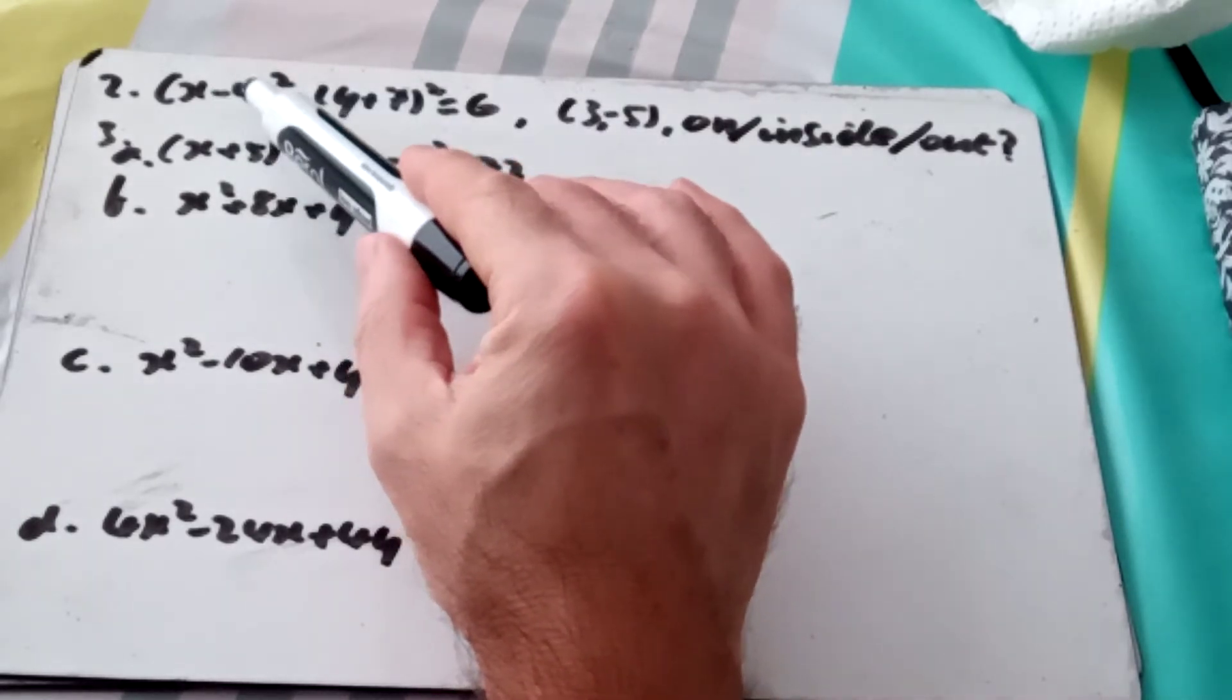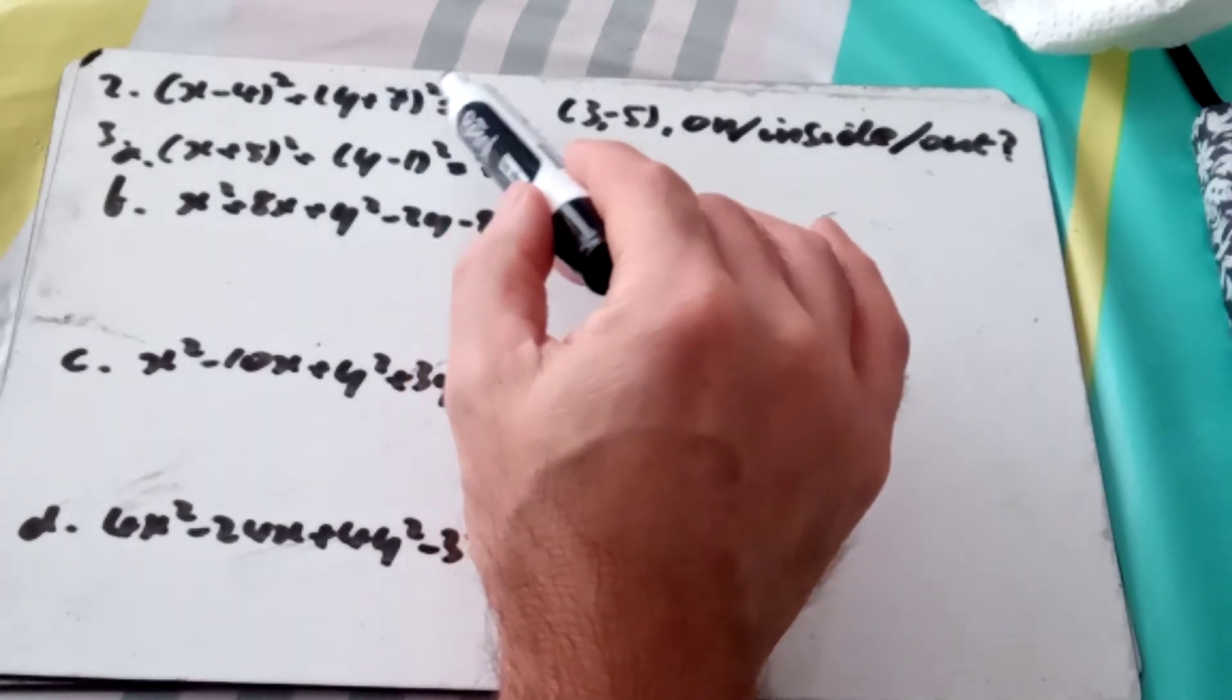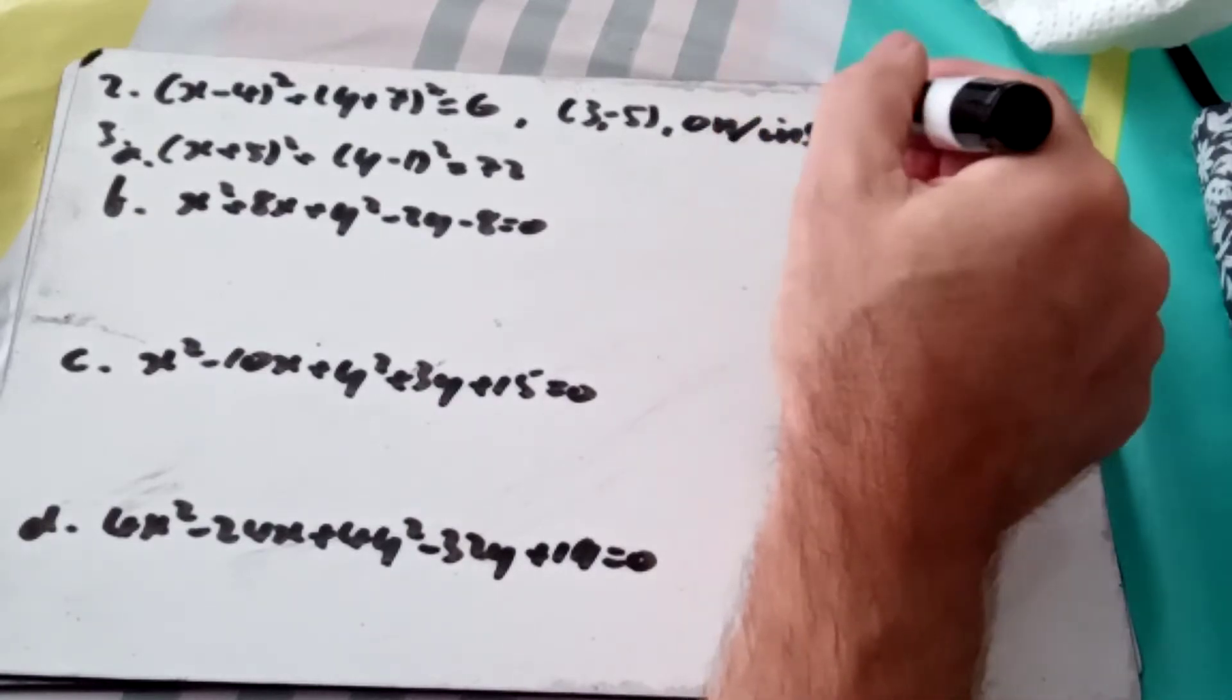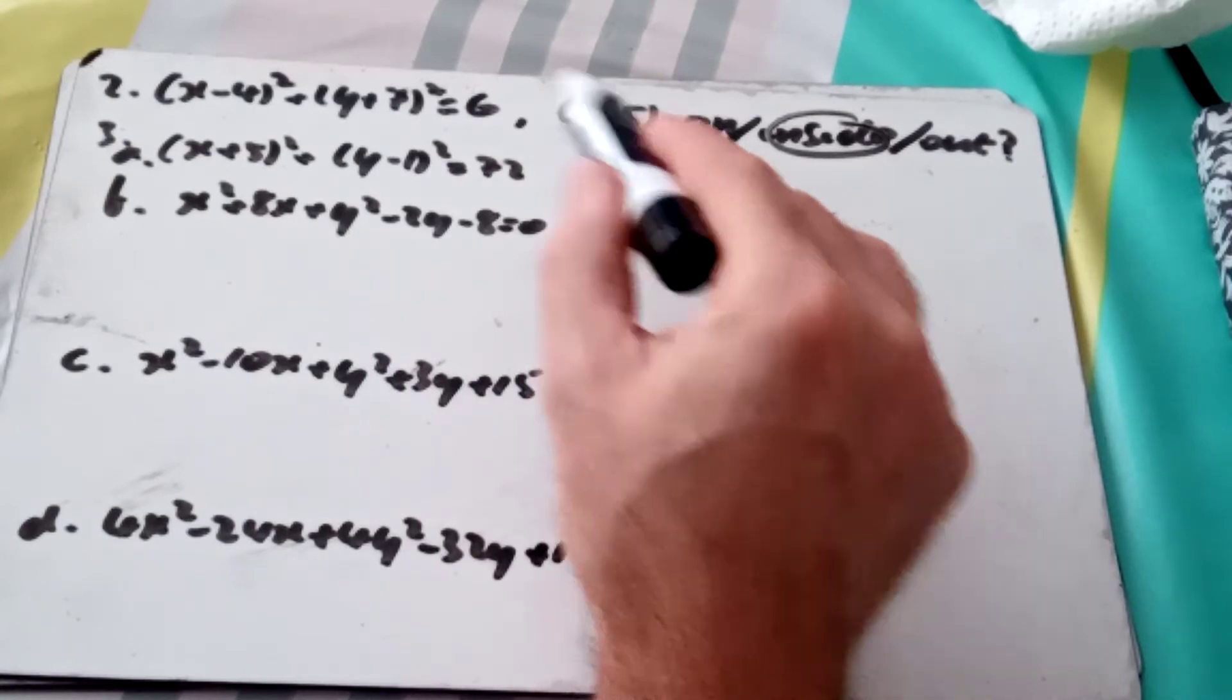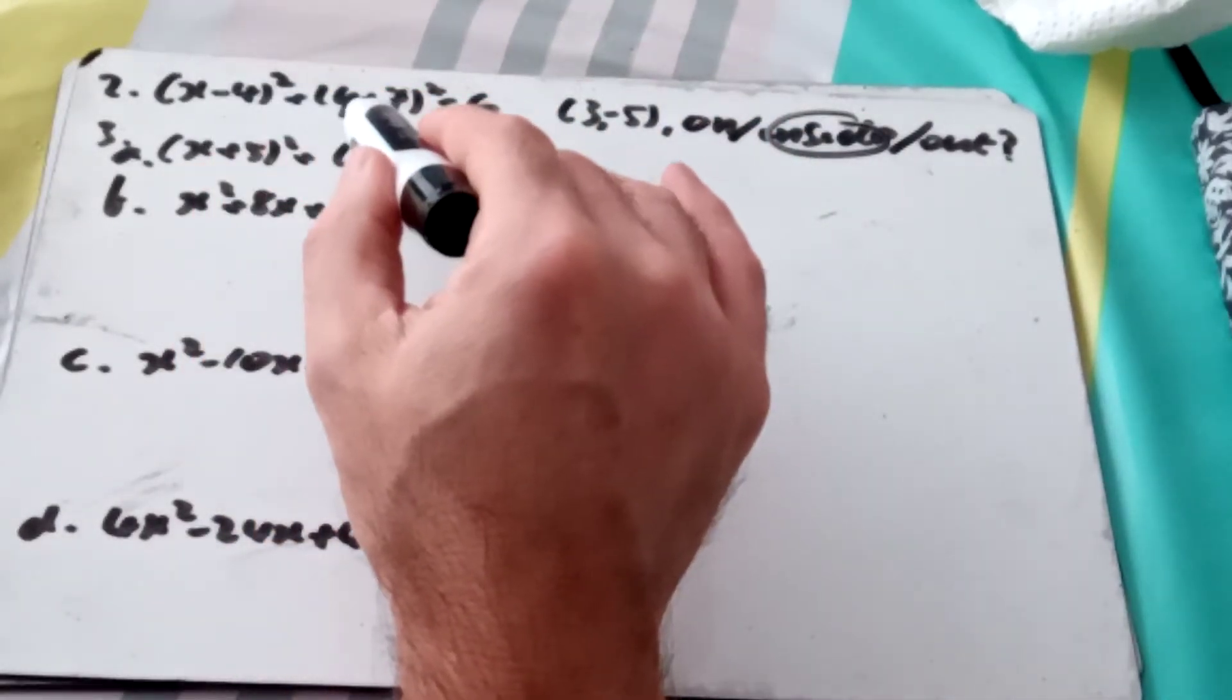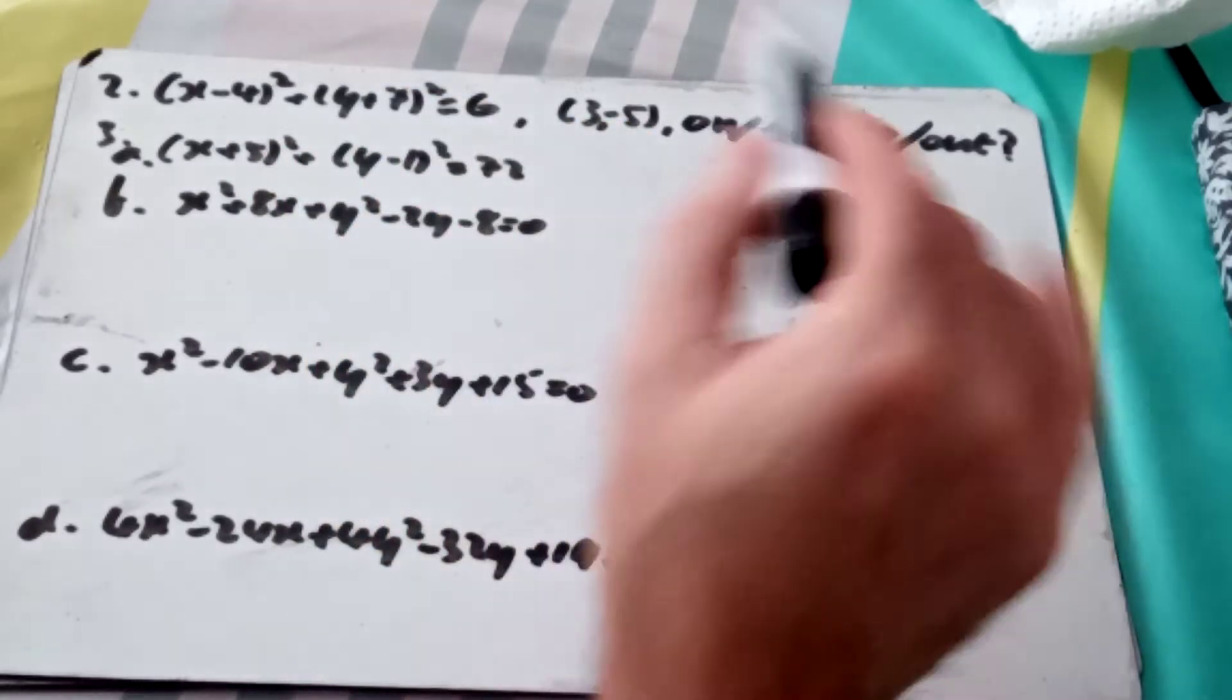So we'll stick 3 and -5 in. (3 - 4)² is -1 squared, which is 1. And (-5 + 7)² is 2 squared, which is 4. 1 plus 4 is 5. So in this case, it's going to be inside, because 5 is less than 6. So I would actually write LHS = 1² + 2² = 5, which is less than 6, so it's inside.